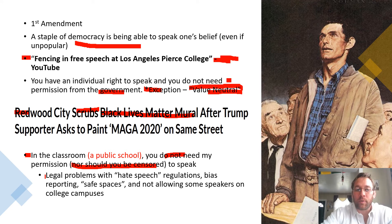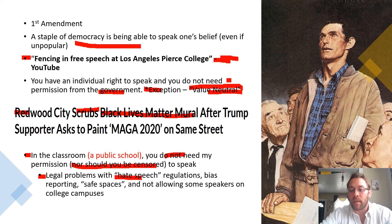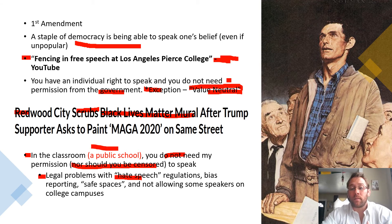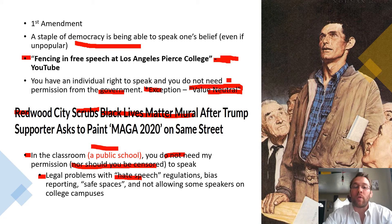This does create legal problems with things like hate speech regulations, bias reporting, safe spaces, and not allowing certain speakers on college campuses. Because if you're talking about a public school — as soon as the public school says political speech is allowed, they have to be value neutral in allowing anyone to speak on certain political issues. You can't say this sort of political speech is allowed and this kind isn't — you have to implement it through a value-neutral lens.